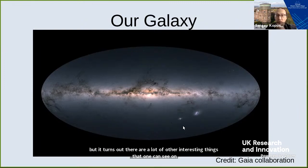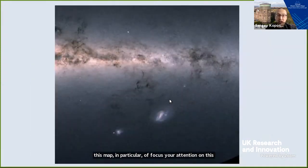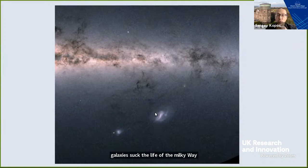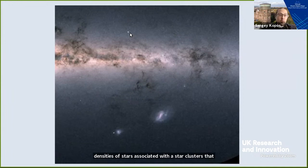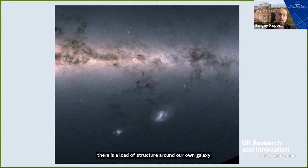It turns out there are a lot of other interesting things that one can see on this map. I'll focus your attention on this corner of the image — these two structures are in fact two dwarf galaxies, satellites of the Milky Way. Aside from these two dwarf galaxies, you can also see other bright dots — those are overdensities of stars associated with star clusters that orbit around the Milky Way. There is a lot of structure around our own galaxy.